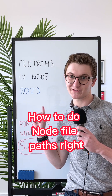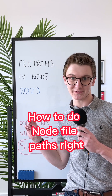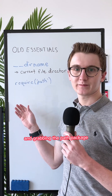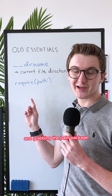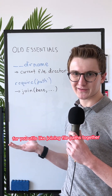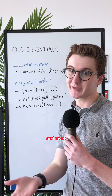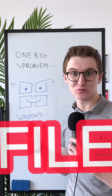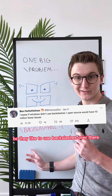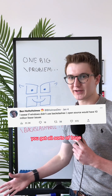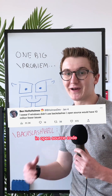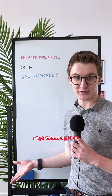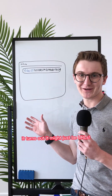If you're a Node developer, there's some stuff you need to know about file paths. You might know the old essentials like __dirname to get the current file directory, and grabbing the path package for utilities like joining file paths together, resolving against your project directory, and more. There's always been a big problem with this approach: Windows file paths, because they like to use backslashes. You get all sorts of bugs in open source code. Maybe there's a standard all platforms agree on.